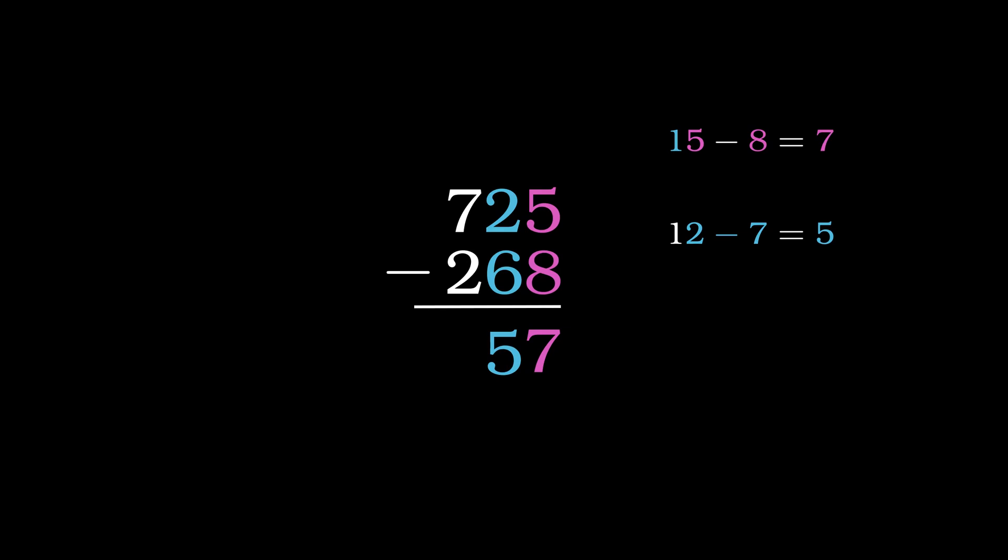Moving on to the last column, 7 minus 2 is allowed, but once again, we need to give back what we borrowed, so 2 will become 3, and 7 minus 3 equals 4. So we can safely say that 725 minus 268 equals 457.